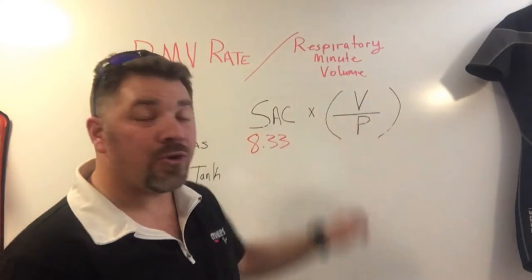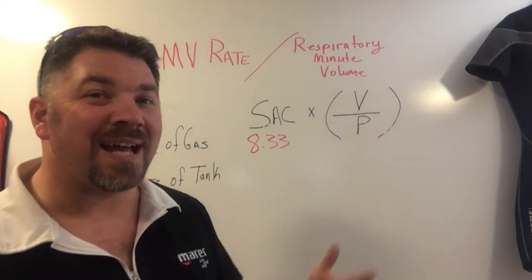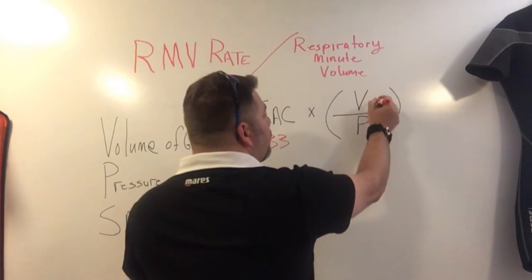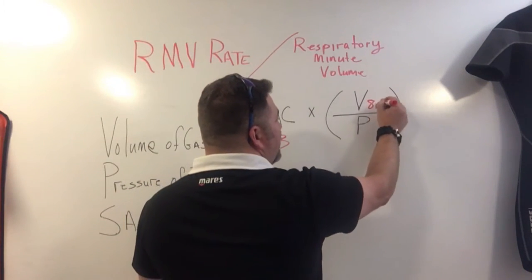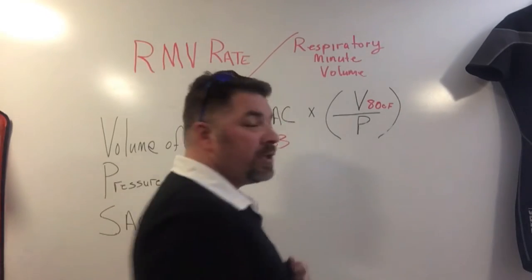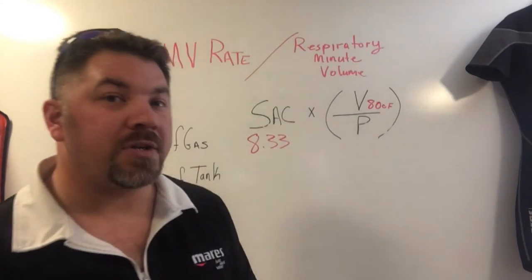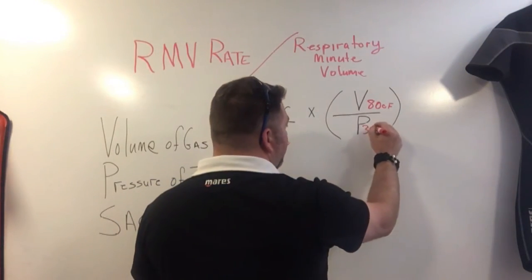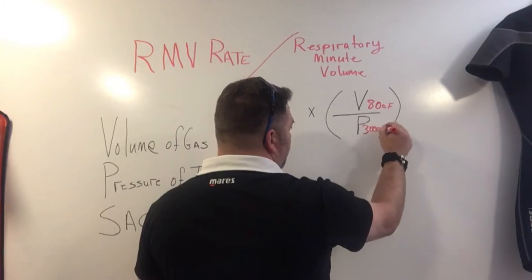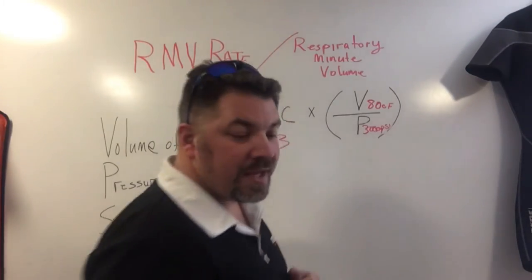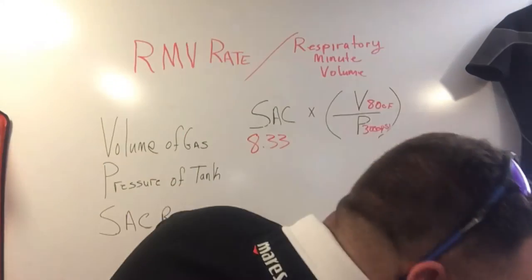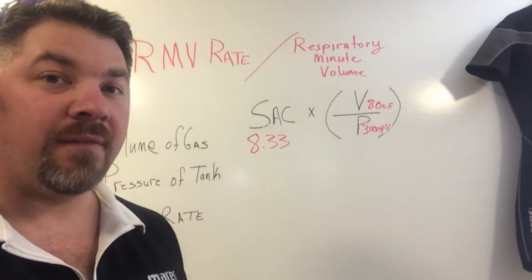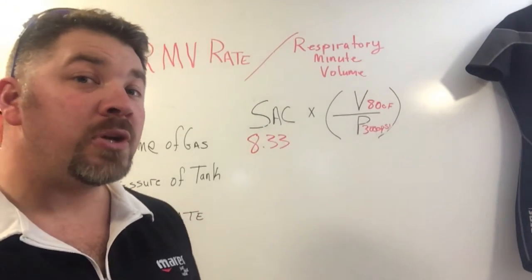For the volume of tank, you can use any size — we're just going to use a standard aluminum 80. So we know the volume is 80 cubic feet and we know that the working pressure of that cylinder is 3,000 PSI.